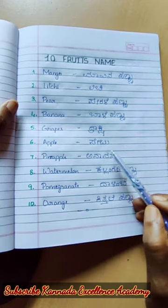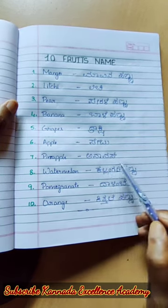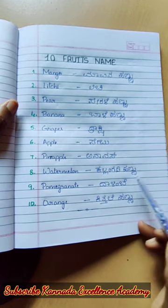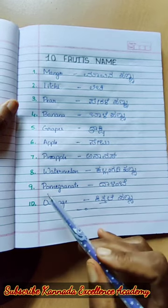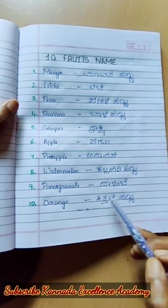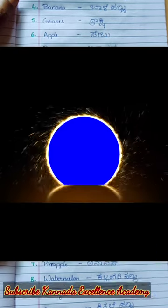Apple — Cebu. Pineapple — Ananas. Watermelon — Kalangadi. Pomegranate — Daalimbe. Orange — Kittalai.